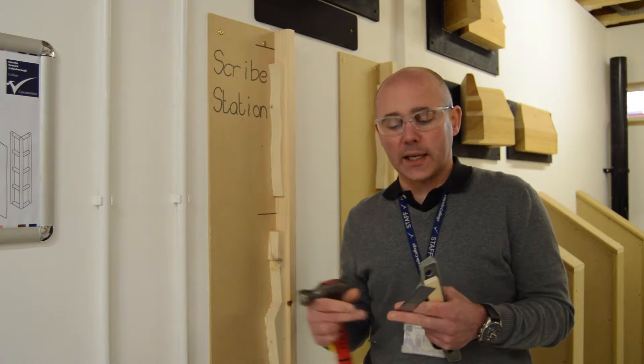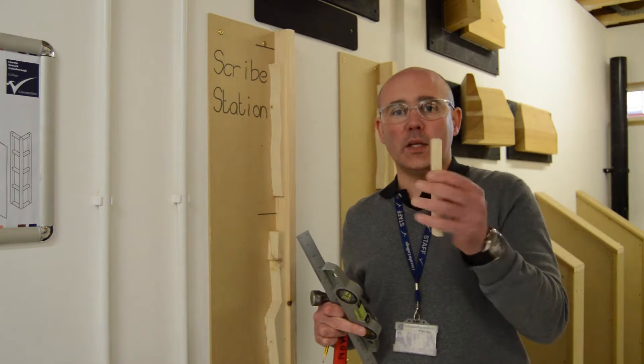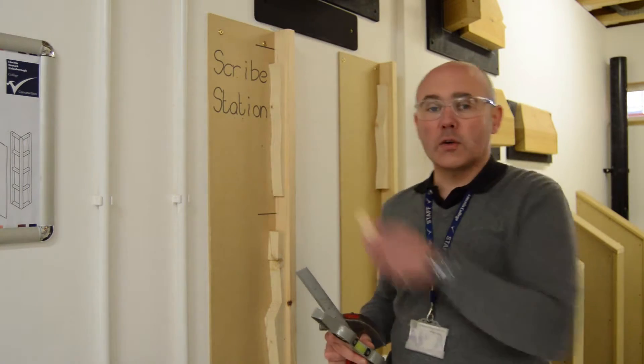The reason I'm using a steel rule today is it's a little bit more accurate than the tape measure. That's going to make sure that we cut it once and it's just going to go straight back. I've got a level and a piece of timber just to draw around as well.